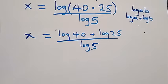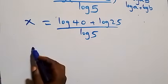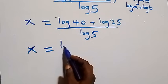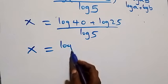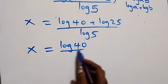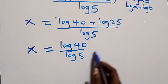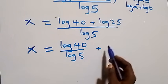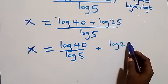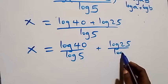We separate this into two fractions, so x equals log 40 over log 5, plus log 25 over log 5.